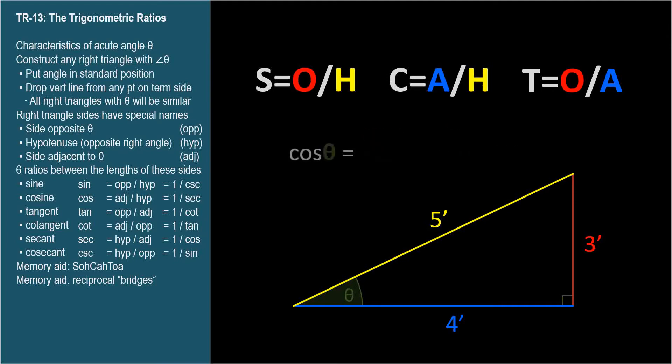How about the cosine? Cosine is CAH: cosine equals adjacent over hypotenuse. The adjacent is 4 feet and the hypotenuse is 5 feet, so 4 feet over 5 feet equals 0.8. And the tangent is TOA: tangent equals opposite over adjacent. The opposite is 3 feet and the adjacent is 4 feet, so 3 feet over 4 feet equals 0.75.